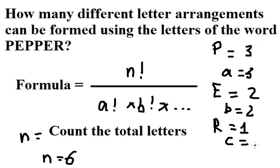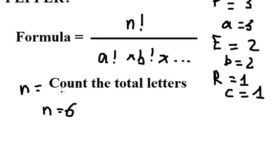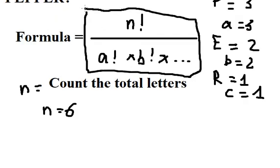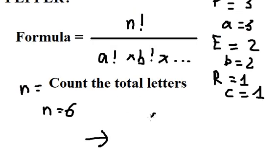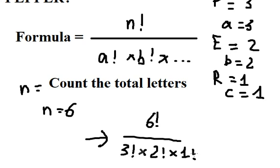So c equals to number one. And now we just apply this formula in here and we got the total arrangements. So we calculate this one and we got 60.